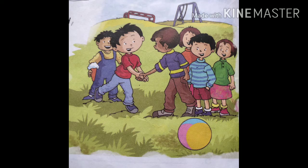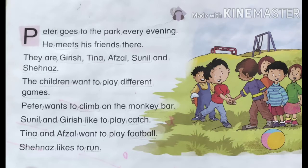Let's read the paragraph again. Peter goes to the park every evening. He meets his friends there. They are Girish, Tina, Afzal, Sunil and Shainaz. The children want to play different games. Peter wants to climb on the monkey bar. Sunil and Girish like to play catch. Tina and Afzal want to play football. Shainaz likes to run.